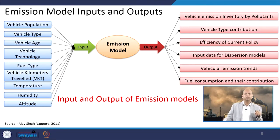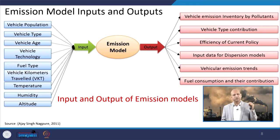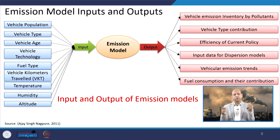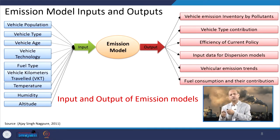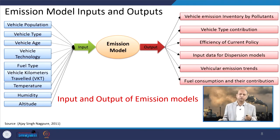Emission inventory output is also useful as input data for dispersion models. Vehicular emission trends show which vehicle is emitting more and which less, so we can intervene technologically or through policy. Fuel consumption contributions show which fuel category like diesel or petrol is emitting more of a particular pollutant. This gives a lot of information for deciding about policies and what kind of intervention is needed to reduce certain pollutants.